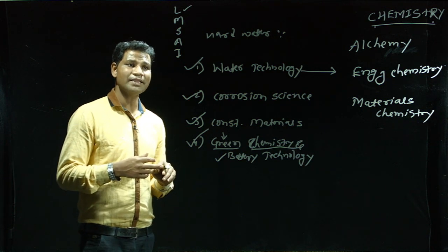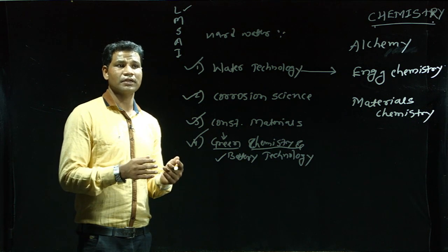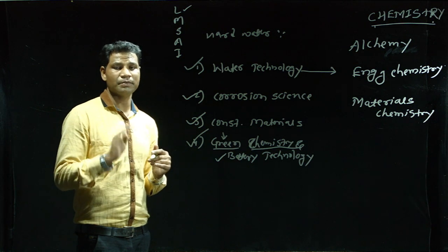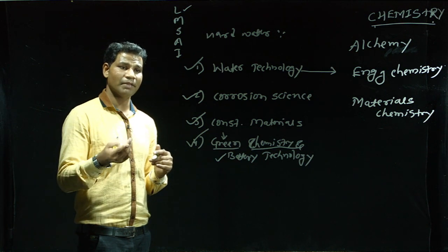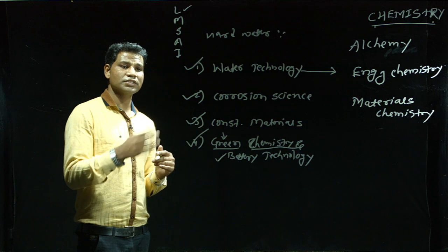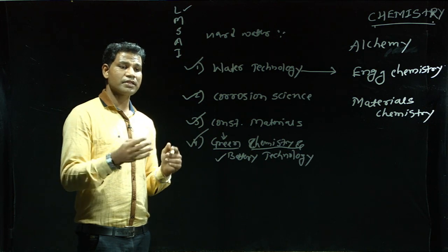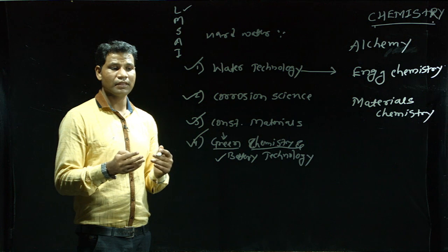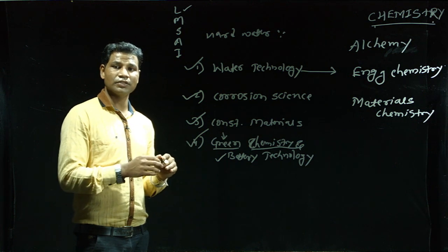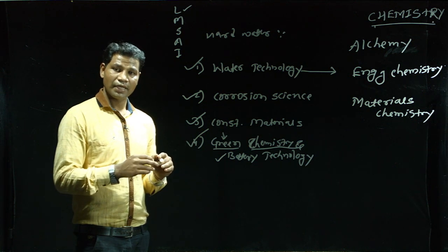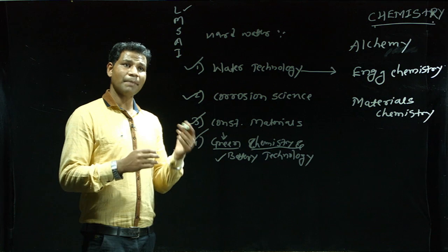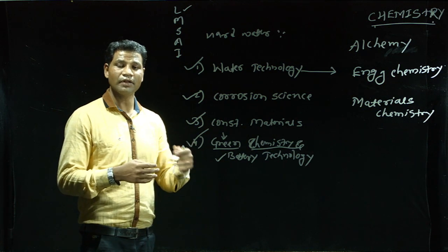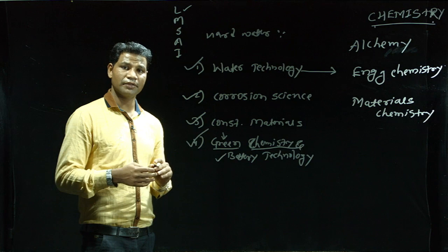This covers the complete syllabus of the first semester, which comprises four different units: Water Technology for 12 marks, Corrosion Science for 10 marks, Construction Materials for 10 marks, and Green Chemistry and Battery Technology for 8 marks. The latter part — Materials Chemistry — will be discussed in our next lecture. Thank you.